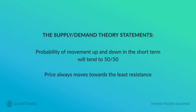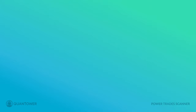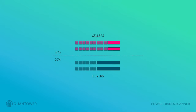Now let's go back to the second statement: price always moves towards the least resistance. To understand this, let's look at the next slide. Here we have an example of simple market depth. There are two parties: the sellers with a total sell volume of 20 lots, and the buyers with a total volume of 200 lots.